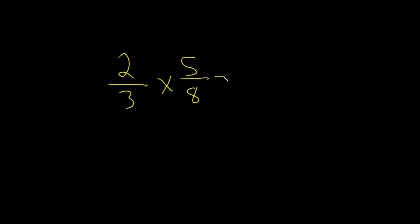If you wanted to show work, which you don't have to, you could write this as 2 times 5 over 3 times 8. You can just actually do it in your head. So 2 times 5 is 10, 3 times 8 is 24.